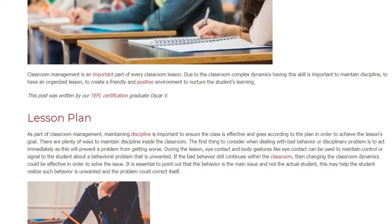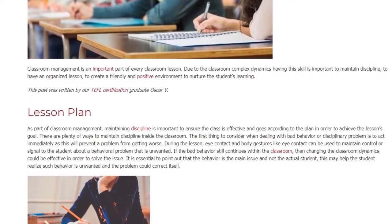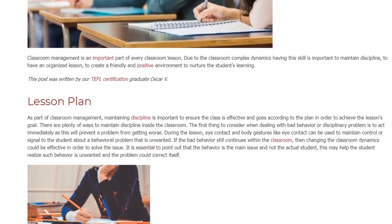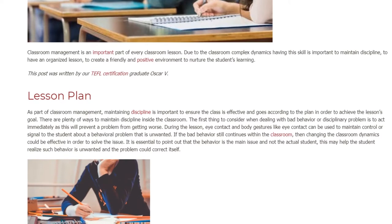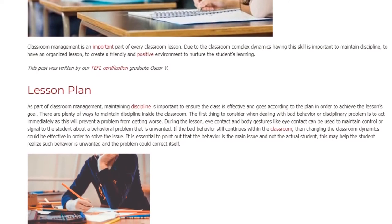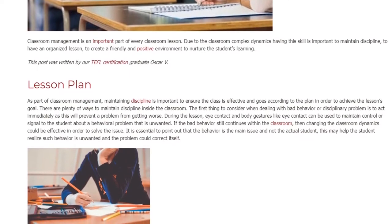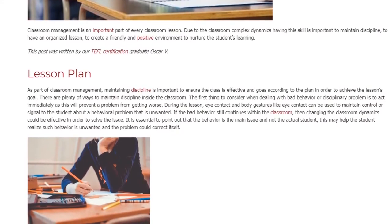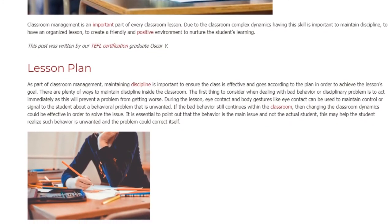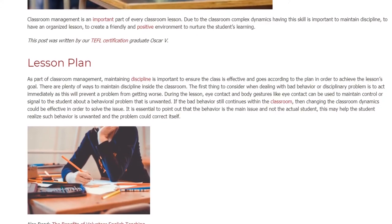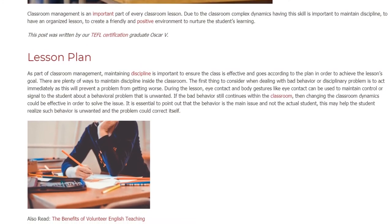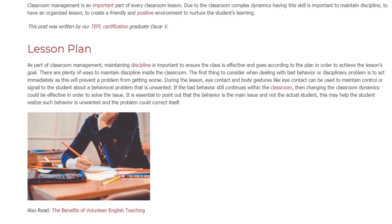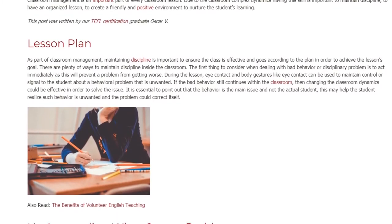Eye contact and body gestures can be used to maintain control or signal to the student about an unwanted behavioral problem. If the bad behavior still continues, then changing the classroom dynamics could be effective. It is essential to point out that the behavior is the main issue and not the actual student, as this may help the student realize such behavior is unwanted and the problem could correct itself.